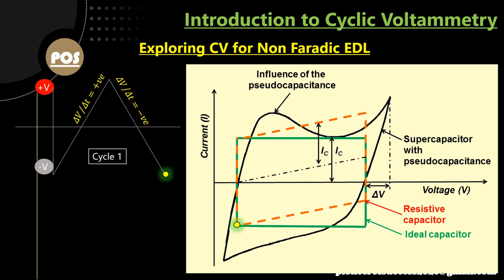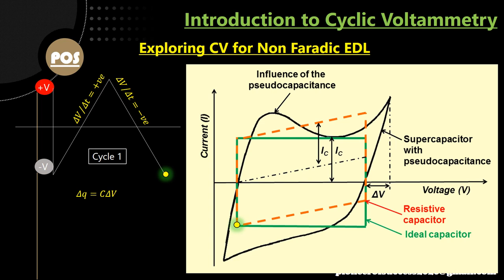Before that, let me just tell you why the current should be like this for the ideal capacitor. For this part of voltage, the current is positive, and for the downward part of the voltage, the current is negative, with a sudden change from the negative to the positive value. Basically, the current in an ideal capacitor will be either a constant positive current or a constant negative current. We get the positive current for the upward shift and we get the negative current for the downward shift. The characteristics equation for a capacitor is: ΔQ = C × ΔV, where C is the capacitance, ΔQ is the change of charge, and ΔV is the change of voltage.